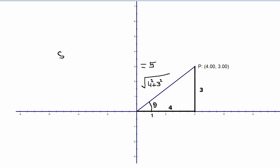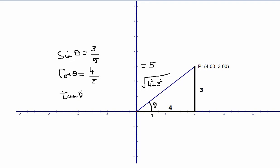According to this, sine theta would be opposite over the hypotenuse — opposite is 3 — so it's 3 over 5. Cosine is adjacent over hypotenuse, so cosine of theta is 4 over 5. Tangent theta is opposite over adjacent, which is 3 over 4. And we can write the reciprocals the same way.